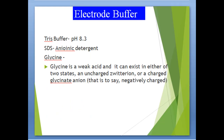The electrode buffer contains Tris buffer at pH 8.3, SDS as an anionic detergent, and glycine. Glycine is a weak acid and it can exist in either of two states: an uncharged zwitterion or a charged glycinate ion.